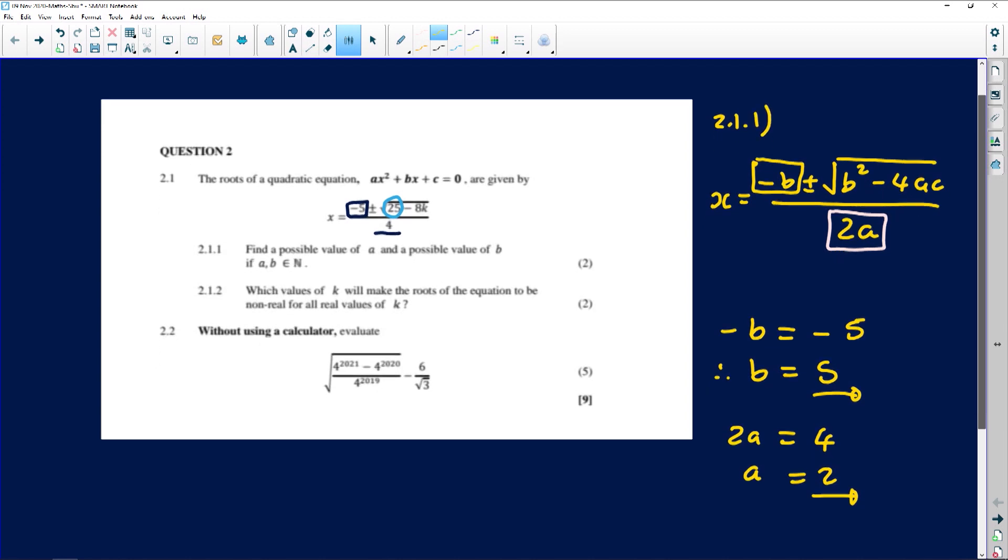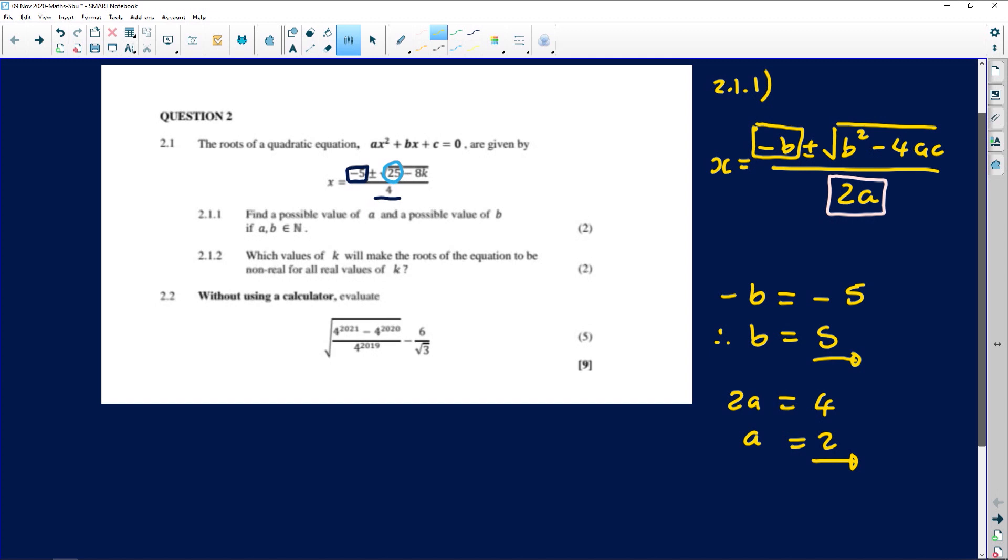Let's move on to 2.1.2. Very exciting question indeed. 2.1.2 says which values of k will make the roots of the equation non-real for all real values of k. Remember, once we start talking about non-real roots, the most important thing to keep in mind is what lies inside the square root sign. If you ask for the nature of roots, the first thing that comes to mind is b² - 4ac.